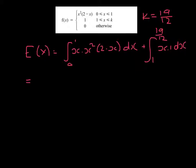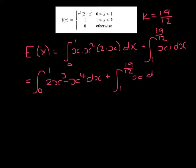Expanding the first set of brackets, we're going to be integrating from 0 to 1, 2x cubed minus x to the power of 4, plus the integral from 1 to 19 over 12 of x with respect to x.